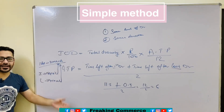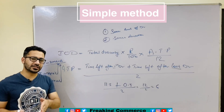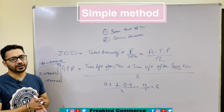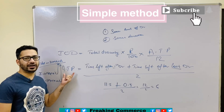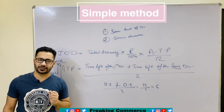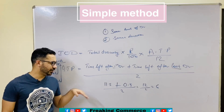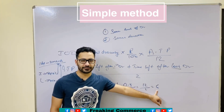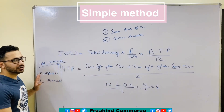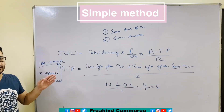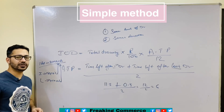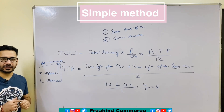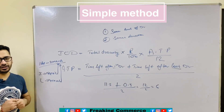So this is your second method of calculating interest on drawing. Whenever there is the same duration with the same amount, then only you can apply this method. It is very important to find the average time period — go for the concepts. Many teachers make you learn these figures for ATP, but do not just memorize — go with the concept. Time left after first drawing and time left after last drawing.